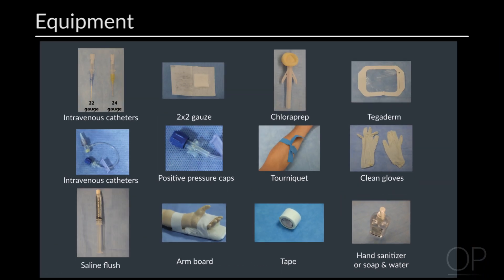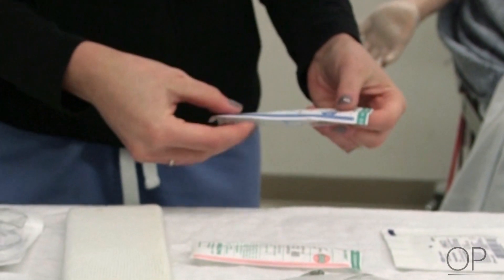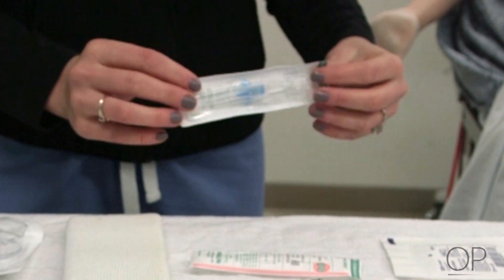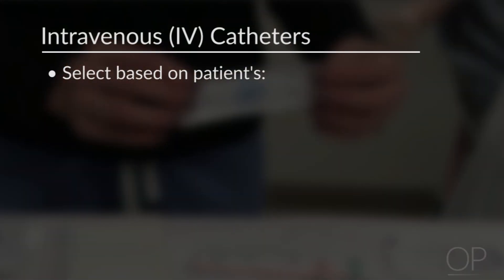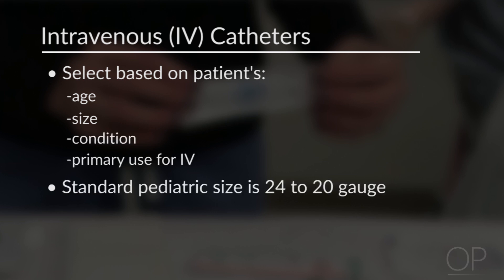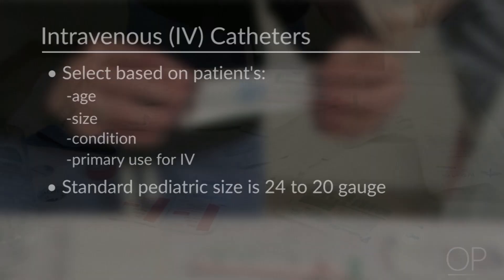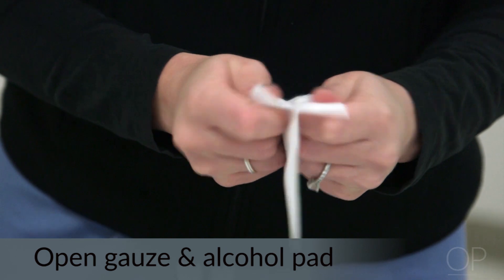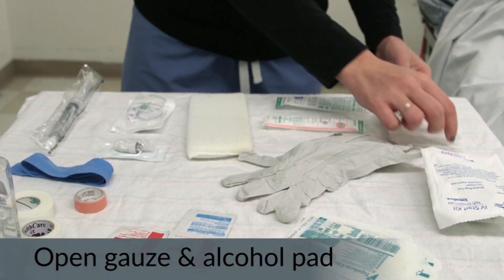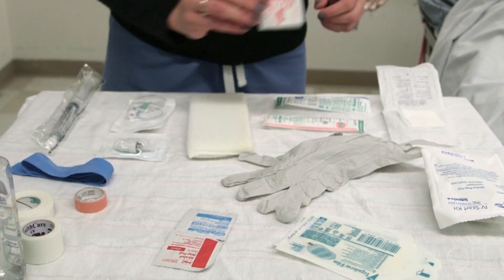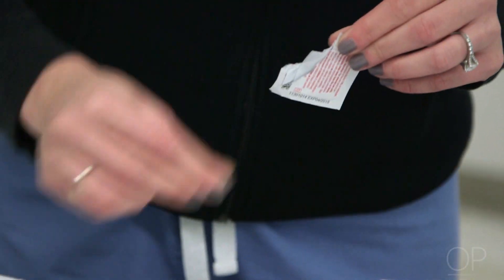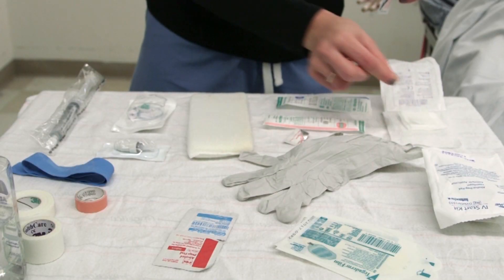Now we're ready for the procedure. You will have the most success if you prepare adequately prior to beginning. First, choose the most appropriate sized IV catheter for your patient, based on age, size, condition, and the primary use for the IV. Standard pediatric sizes are usually 24 to 20 gauge. Next, open the gauze and your alcohol or chlorhexidine cleaning solution. If it is a pre-soaked pad, grasp it at the corner and place it in the center of the 2x2 gauze.